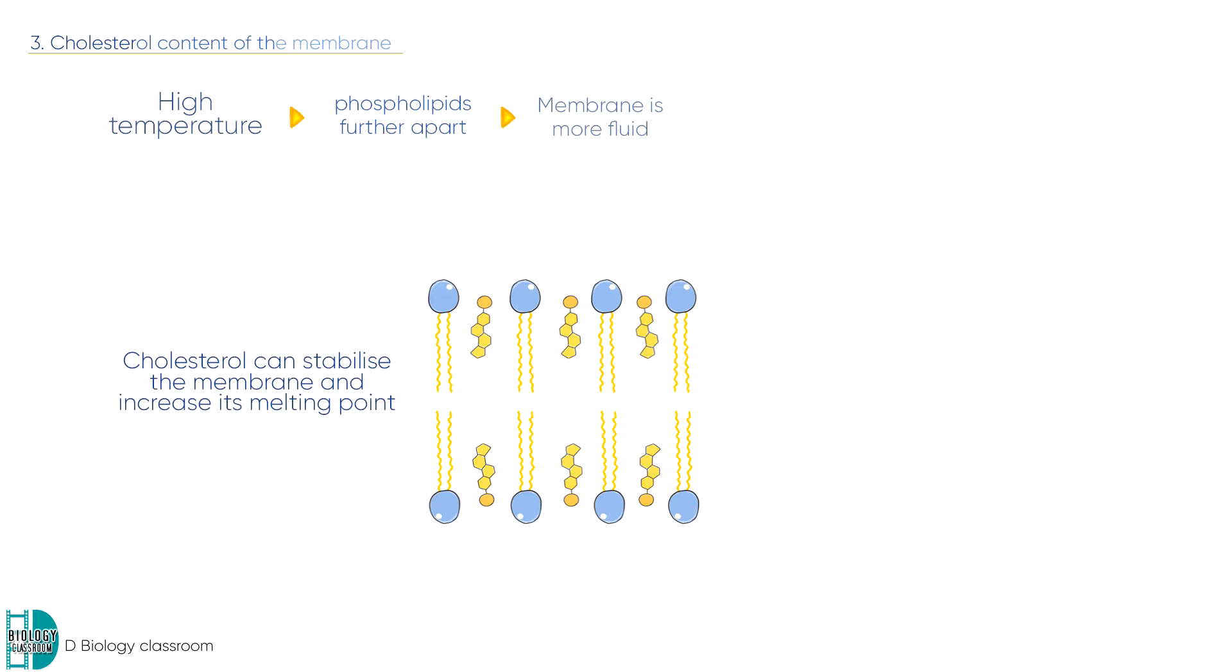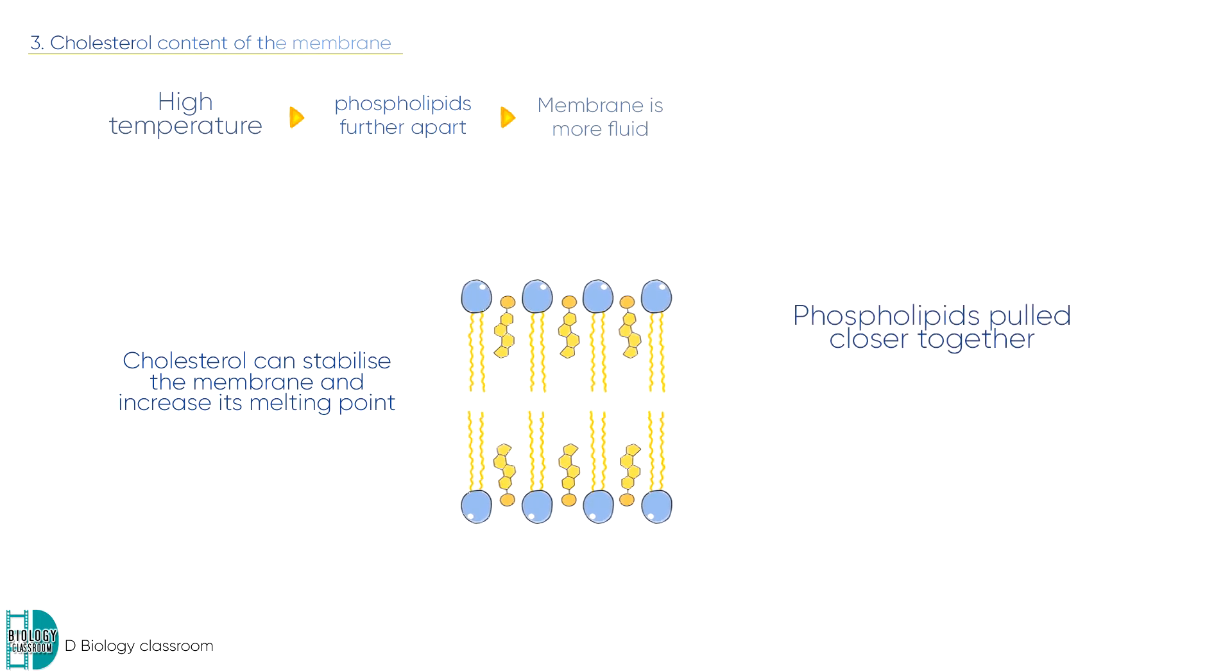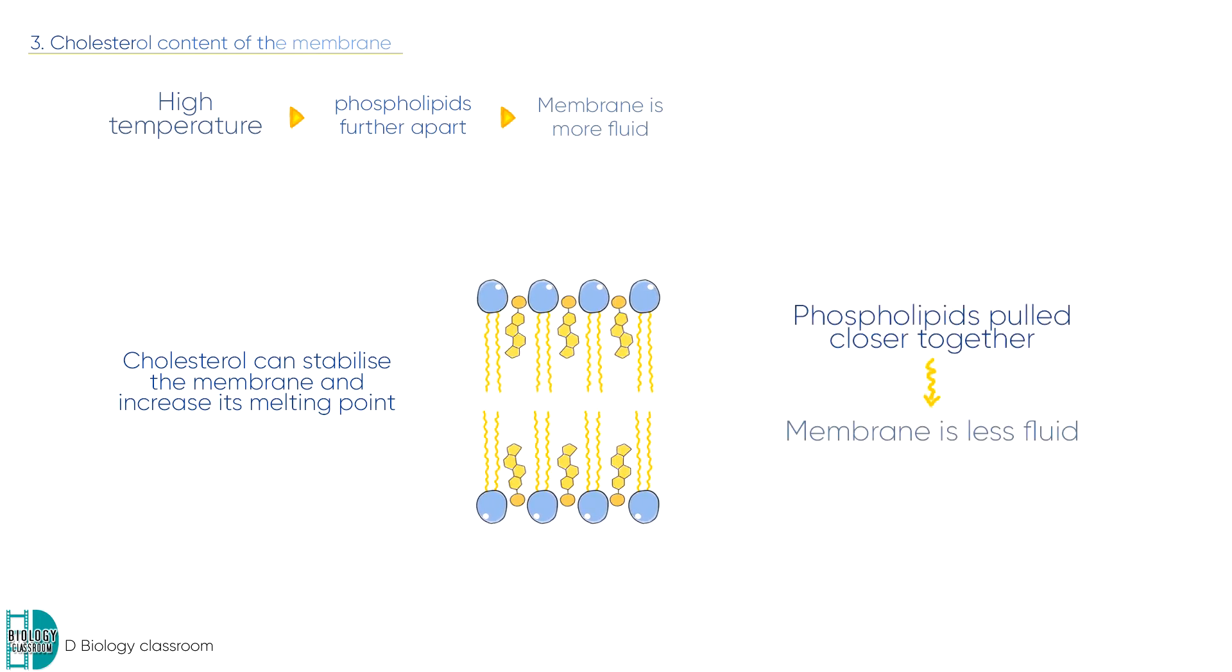Cholesterol in the membrane has the opposite effect. They stabilize the membrane and raise its melting point. They interact with the fatty acid tails of phospholipids, pulling them together and decreasing fluidity.